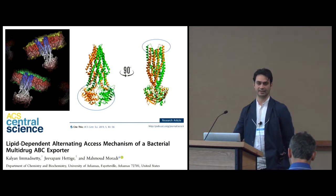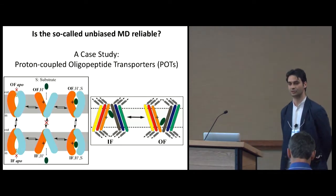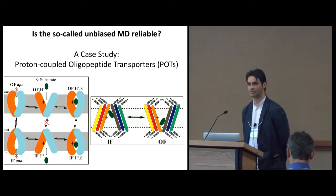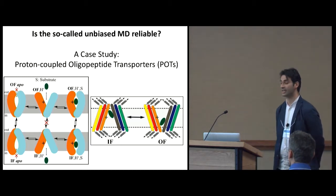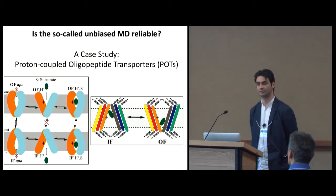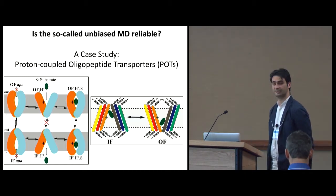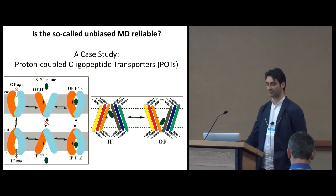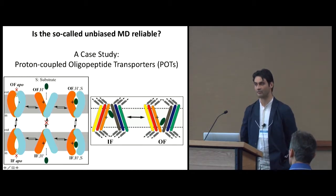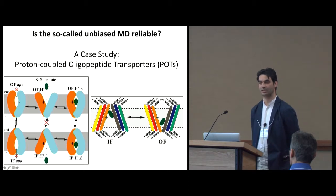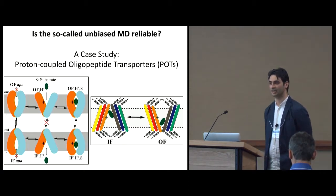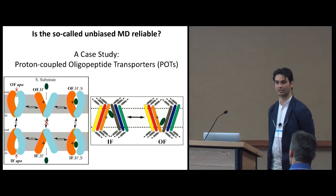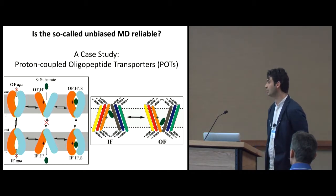This is an example of an environmental change that could cause larger-scale conformational changes to occur or not. The larger-scale conformational changes in proton-coupled oligopeptide transporters have been something we've been studying over the last couple of years. The proposed mechanism involves protonation of specific amino acids, as well as binding, unbinding, and transport of substrates like a dialanine peptide.